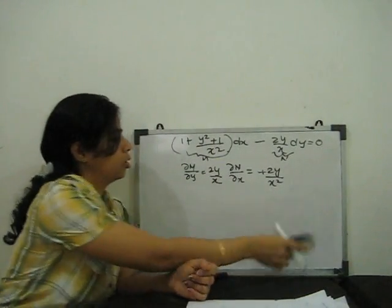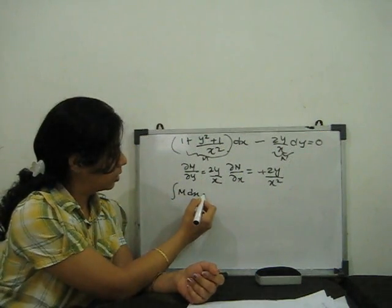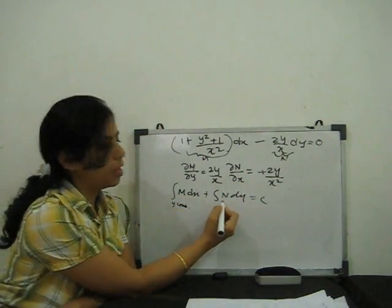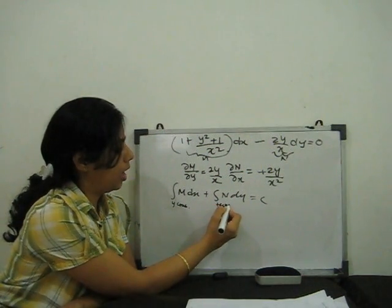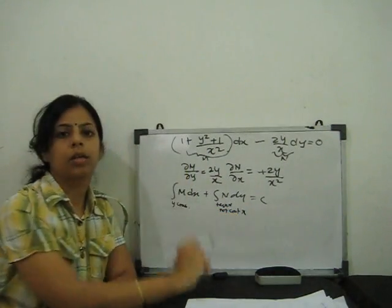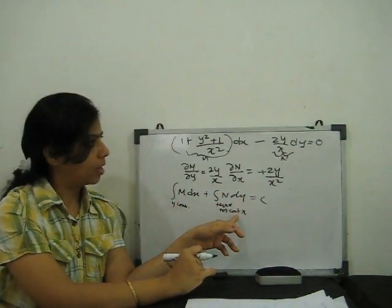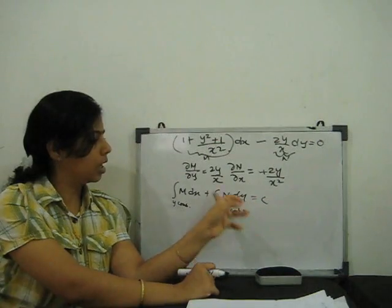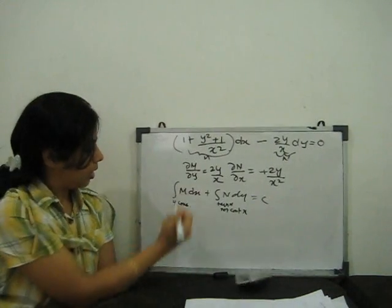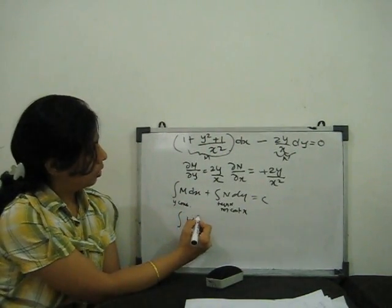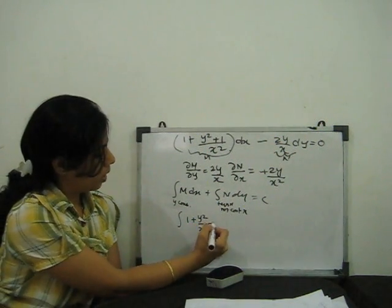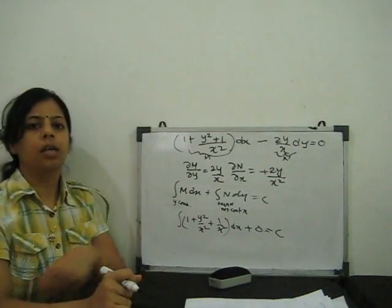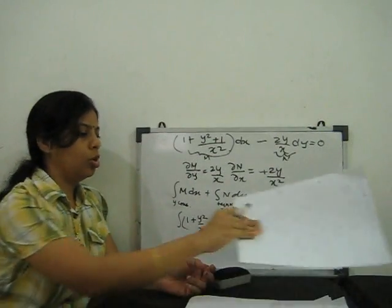We apply the exact solution: ∫M dx (y constant) + ∫N (terms not containing x) dy = C. In this N term, there is no term without x, so that integral is 0. The solution becomes ∫(1 + y²/x² + 1/x²) dx = C. Just integrate to get the final solution. That is the first case.